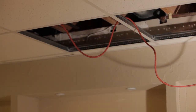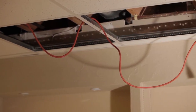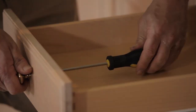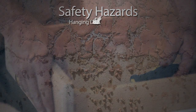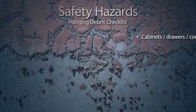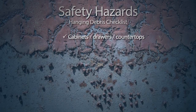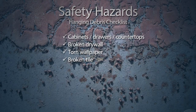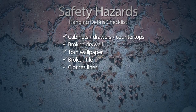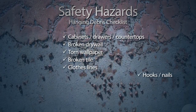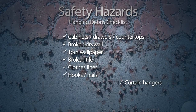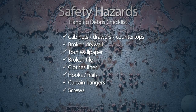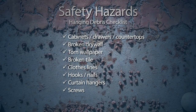The seventh safety hazard location to look at is the interior and exterior ceilings and walls. All loose objects must be secure. This includes cabinets, drawers, and countertops. Any hanging debris including drywall, wallpaper, tile, clotheslines, and so forth should be removed or re-secured. Additionally, all hooks, nails, curtain hangers, screws, and so on must be removed from the walls, ceilings, and doors of the entire property.